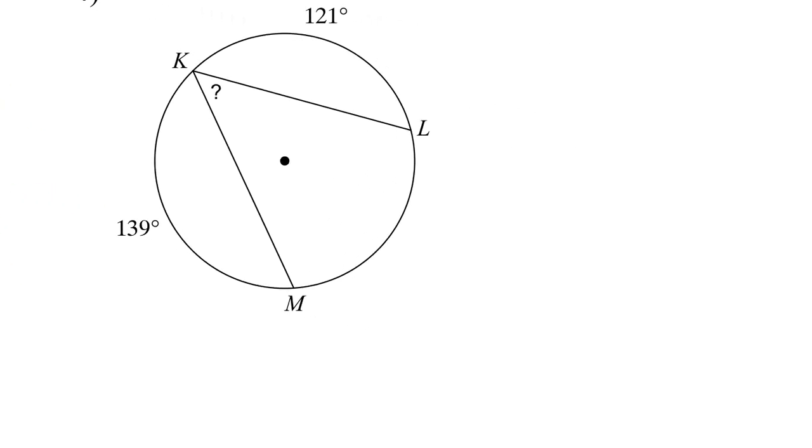So number four, again, I'm going to do the same, 360 minus 121 minus 139. That's going to give me that this arc is 100. And that means that the measure of the angle MKL equals to one half of 100. And that's going to give you 50 degrees.